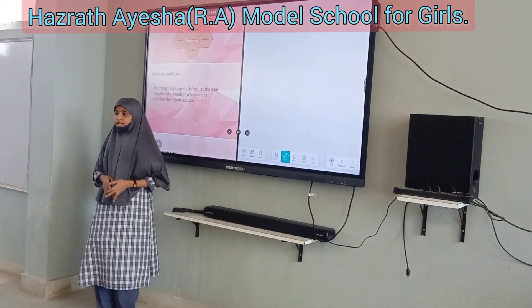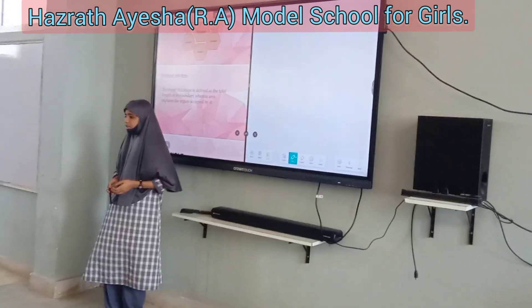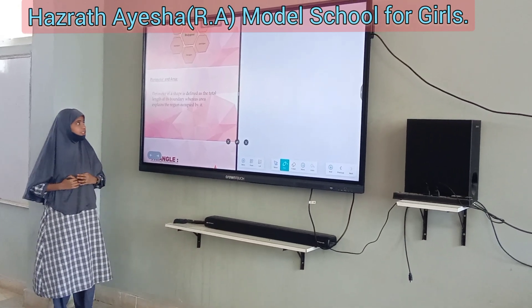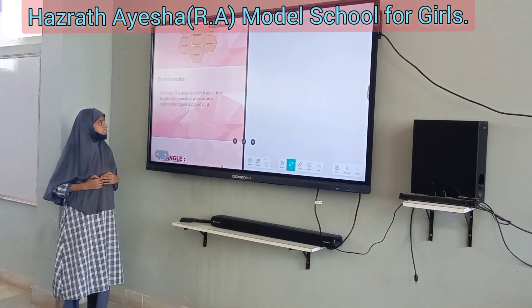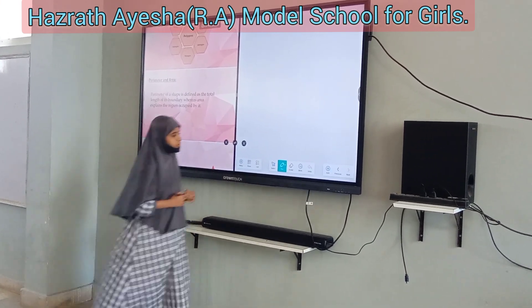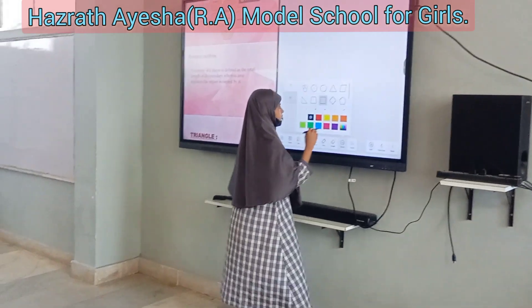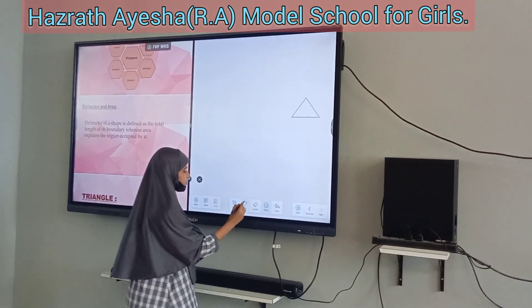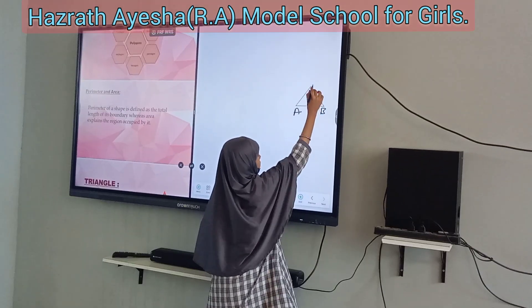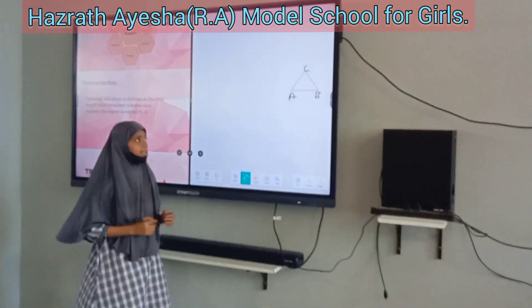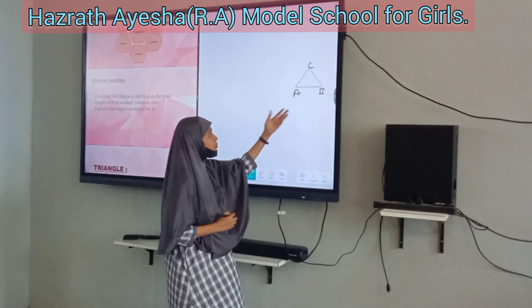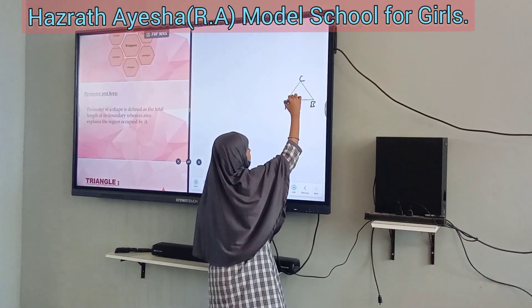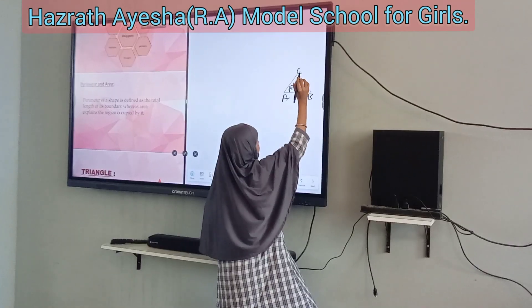Before moving forward, let's learn about perimeter and area — what is perimeter and what is area. The perimeter of a shape is defined as the total length of its boundaries, whereas area explains the region occupied by it. For example, this is a triangle with three sides. The sum of the lengths of the three sides — its boundaries — is called the perimeter, whereas the space occupied by the shape is called the area.